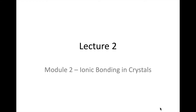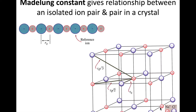We've just looked at ionic bonding in a bonding pair, but we want to bring this to a larger three-dimensional structure, and that's what we're going to do in the second module. We do that by way of what's called the Madelung constant — a constant that gives us the relationship between an isolated ion pair and a pair in a larger crystalline structure, allowing us to extrapolate and determine what that would be like in a crystal.